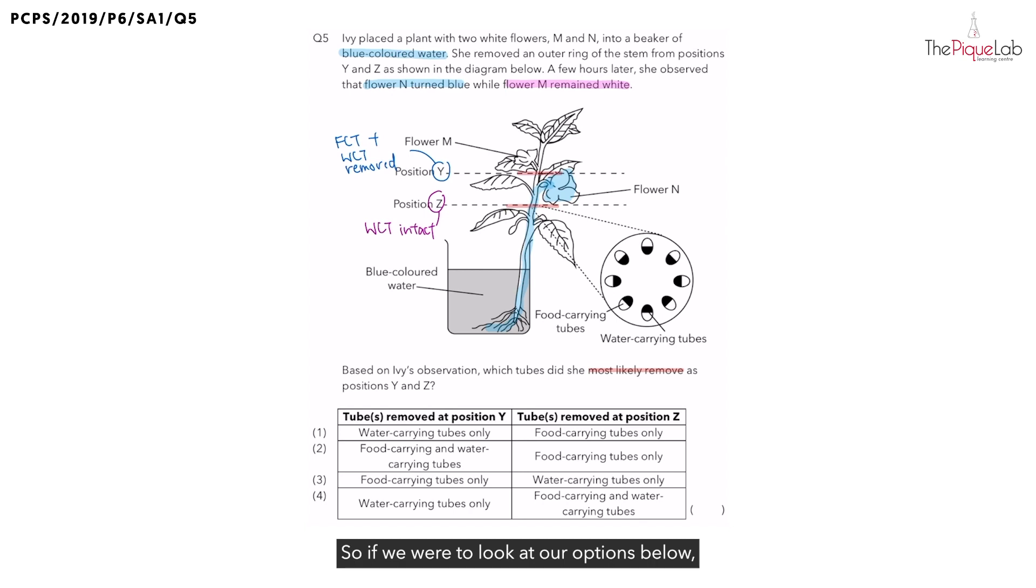So, if we were to look at our options below, we know that at position Y, the food carrying tubes and water carrying tubes were removed. Thus, we are able to eliminate the first option, the third option and the last option,